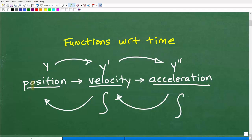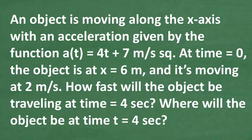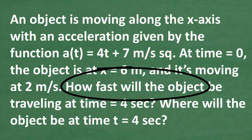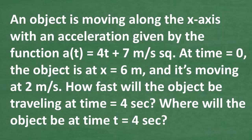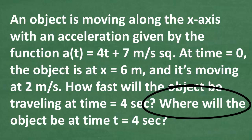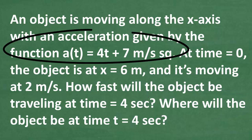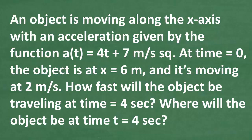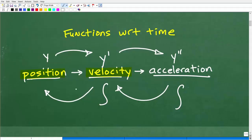You've got to know these relationships because we have questions related to position and velocity. We're going to need a velocity function for 'how fast,' and a position function for 'where will the object be.' But we're given the acceleration function, so we're going to have to use the relationship between acceleration, velocity, and position — integrating our way from acceleration to velocity to position.